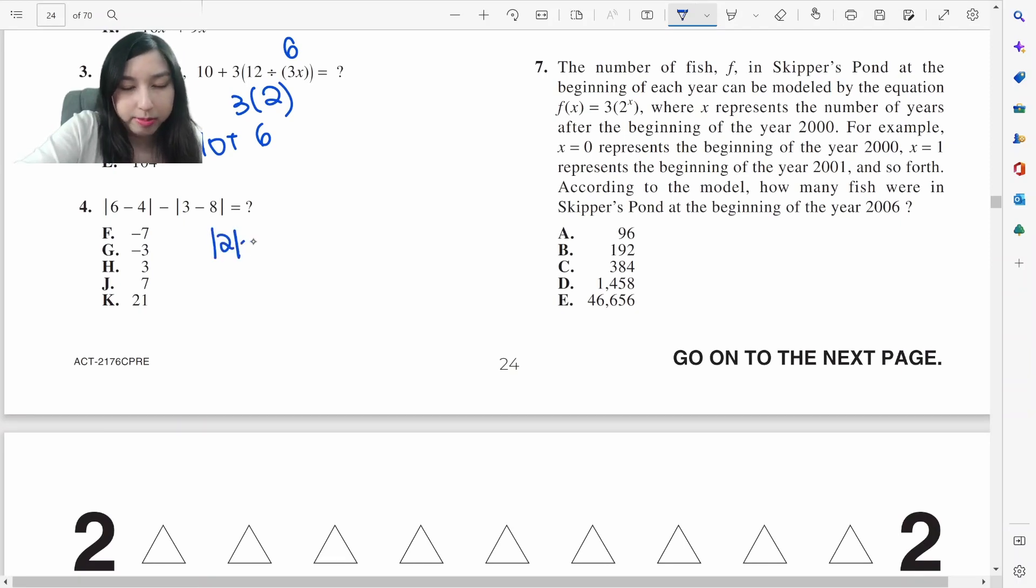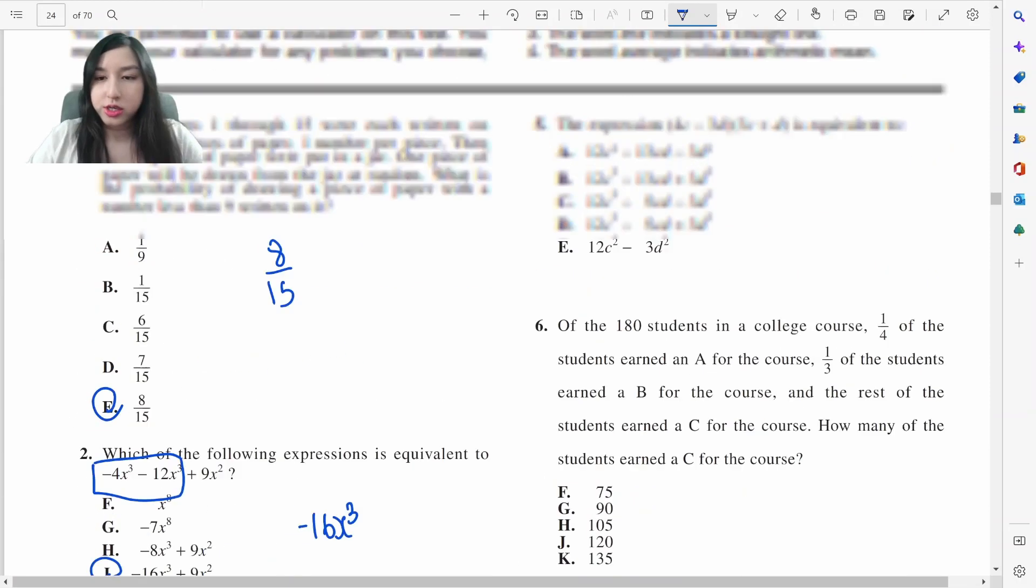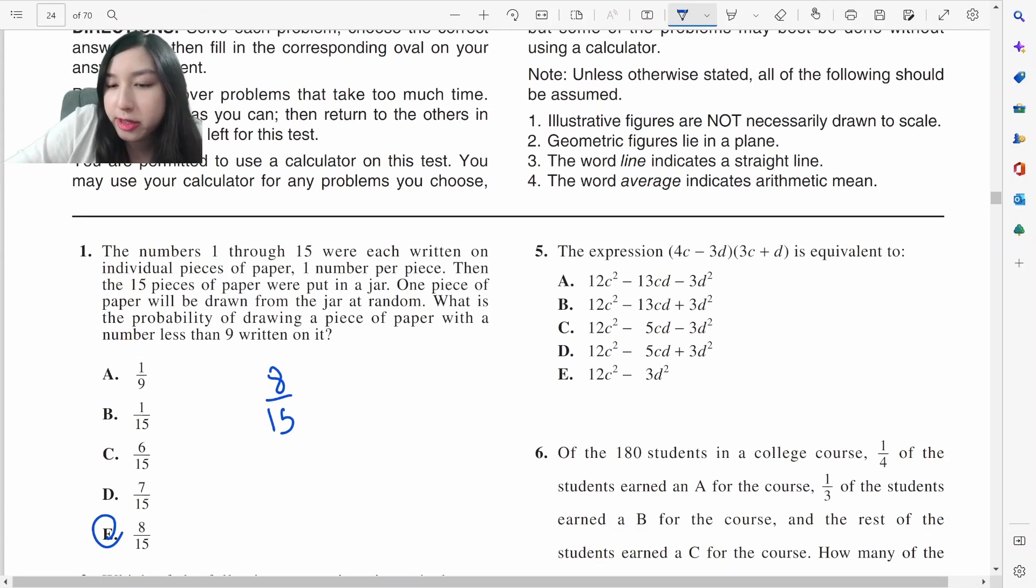Absolute functions. Absolute of 2 minus the absolute of negative 5 would be 2 minus 5 which is negative 3. That's going to be G. We are doing foiling here, so 4c times 3c would be 12c squared. Negative 3d squared and this would give us plus 4 minus 9 which is negative 5.